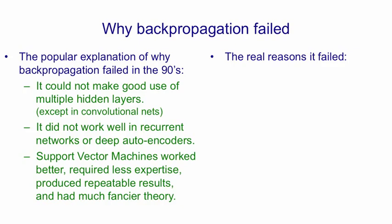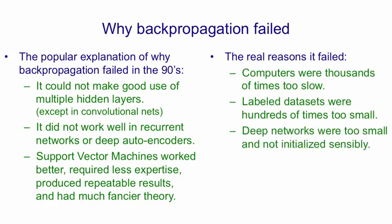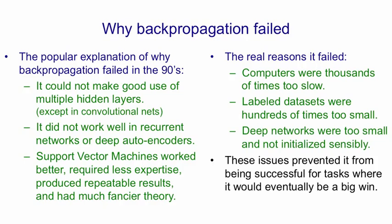With a more historical perspective, we can see why it really failed. The computers were thousands of times too slow, and the labelled data sets were hundreds of times too small for the regime in which backpropagation would really shine. Also, the deep networks, as well as being too small, were not sensibly initialised. So backpropagating through deep networks didn't work well because the gradients tended to die, since the initial weights were typically too small. These issues prevented backpropagation from being successful for tasks like vision and speech, where it would eventually be a big win.